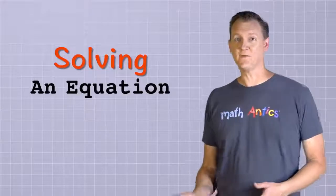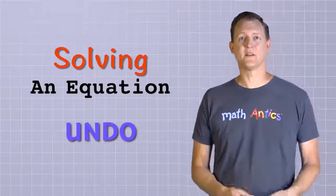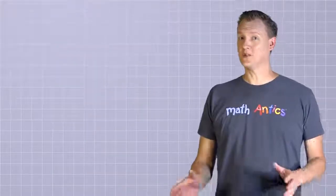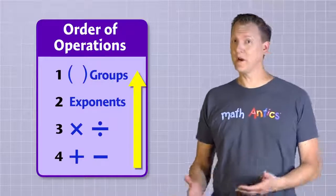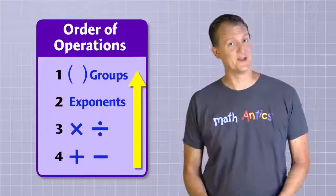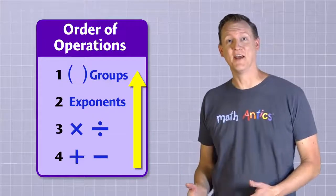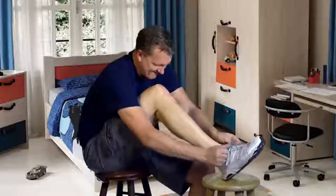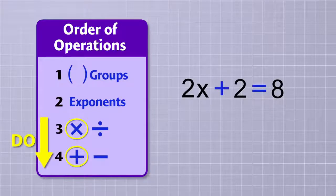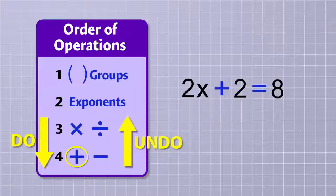But solving an equation is different because we're trying to undo any operations that the unknown value is involved with, so that the unknown value will be all by itself. So when solving equations, the best strategy is to apply those order of operations rules in reverse. Using the reverse order of operations is not the only way to solve a multi-step equation, but it's usually the easiest way. Since the order of operations rules tell us to do multiplication before we do addition, we should undo addition before we undo multiplication.